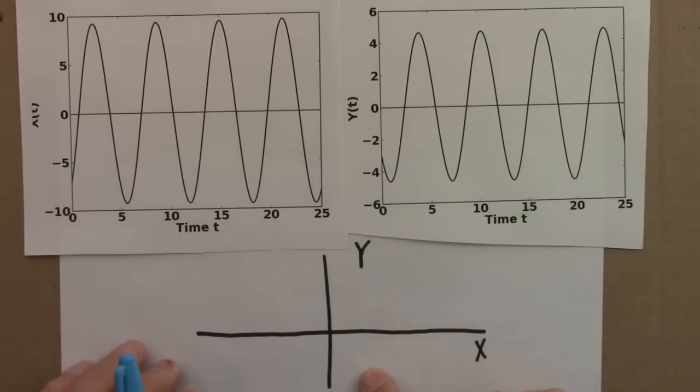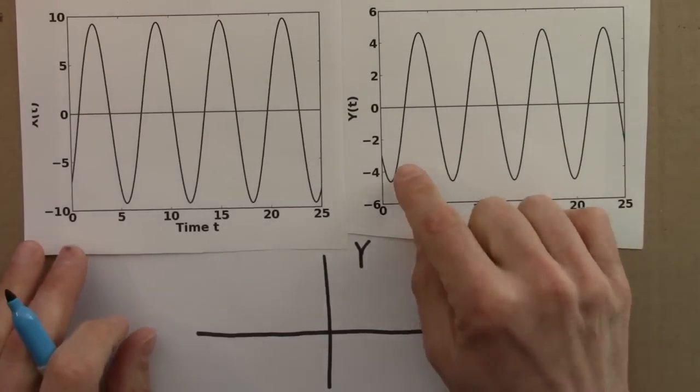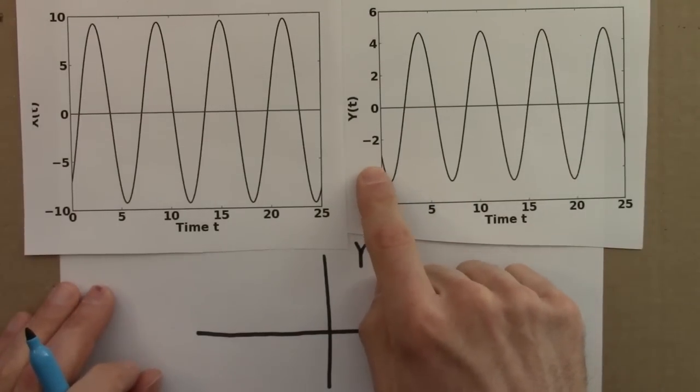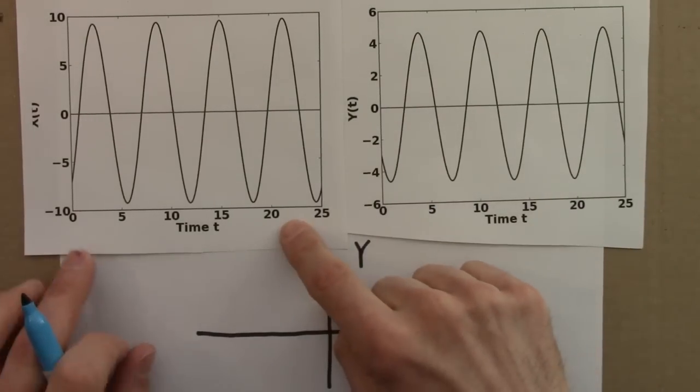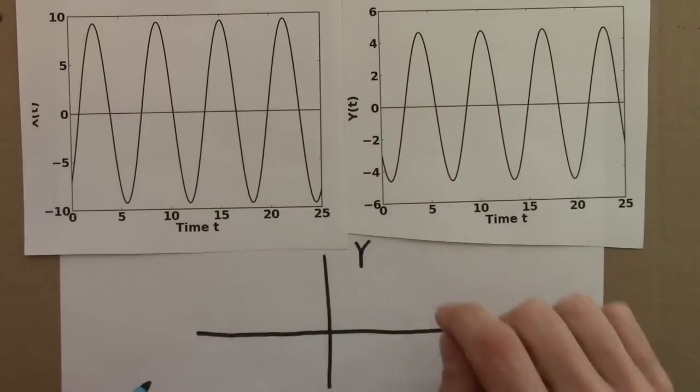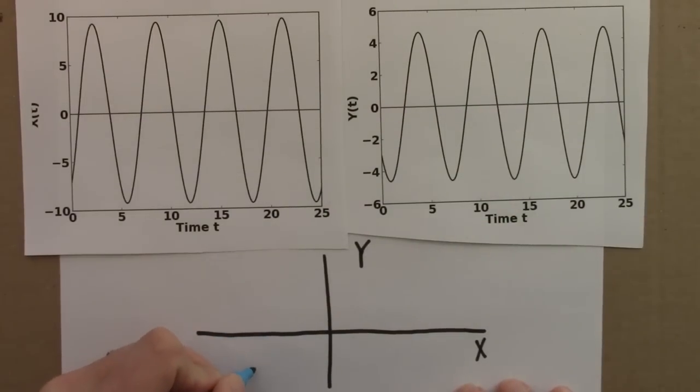So here are my axes. This is x against y. No time on the phase plane. And we start, it looks like I chose the same starting point as before. y is minus 3, x is, I think that's minus 7. So x is minus 7, y is minus 3. I'm going to start here.